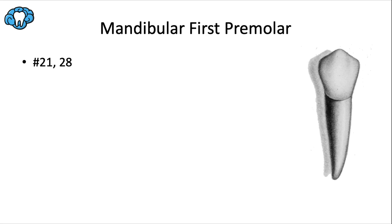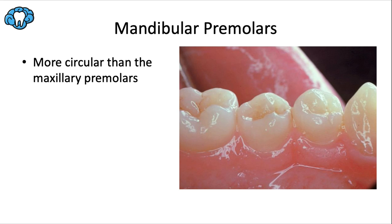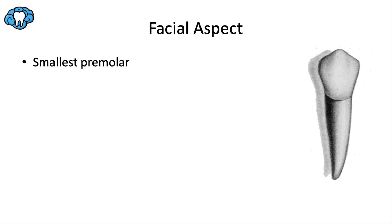Mandibular premolars are generally more circular than the oval-shaped maxillary premolars, because the mesiodistal dimension, unlike the maxillary premolars, is somewhat close to the facial-lingual dimension, making it look a little more round or circular as opposed to oval. The crown has a characteristic upside-down bell shape, or we could say a pentagon shape, and this is the smallest of all the premolars.